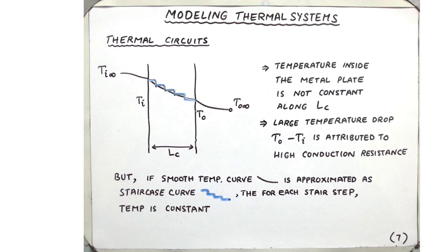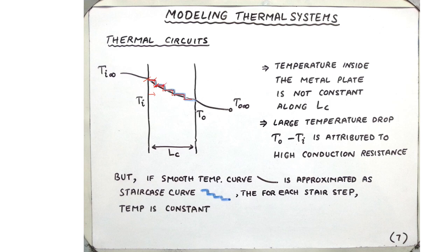One smart approach is to approximate the decaying temperature curve inside the substance as a staircase pattern. In each step, the temperature is kept constant — from one point to the next the temperature remains the same, and again constant across the next step. So the temperature within each step is constant.